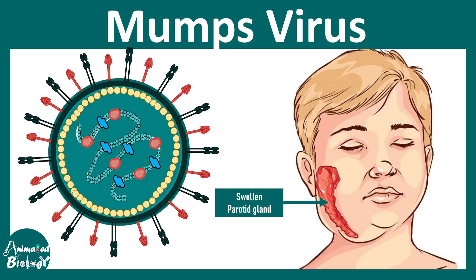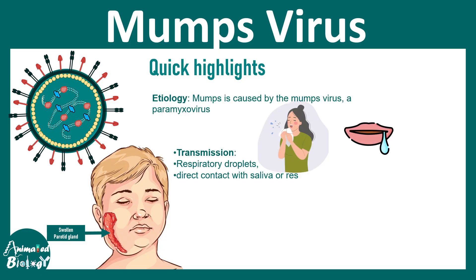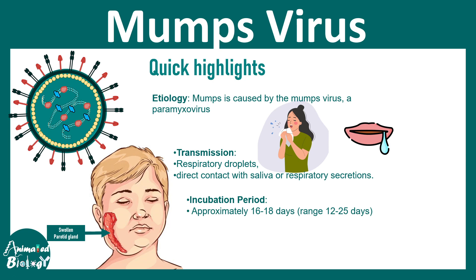In this video we'll talk about mumps virus. Mumps is a very contagious infection caused by a paramyxovirus. Its transmission primarily happens via respiratory droplets, which often occurs during coughing or sneezing, and it can also happen when you directly touch or come in contact with saliva or respiratory secretions. The incubation period is typically 16 to 18 days but can last up to 25 days.